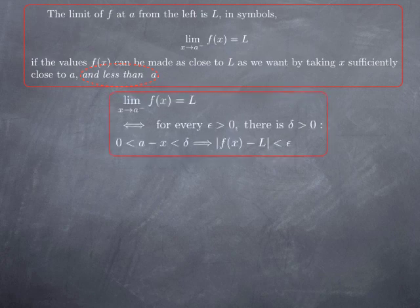Formally, what that means is in the epsilon delta definition of the limit, we need to modify the condition of x being within a distance delta of a, because now we want x to be within delta of a and at the same time less than a.